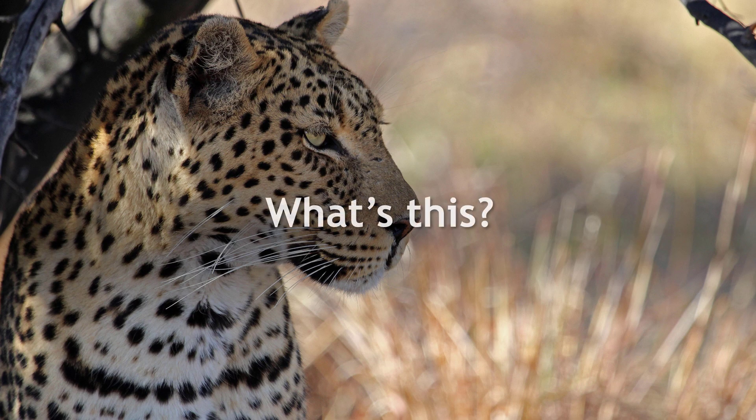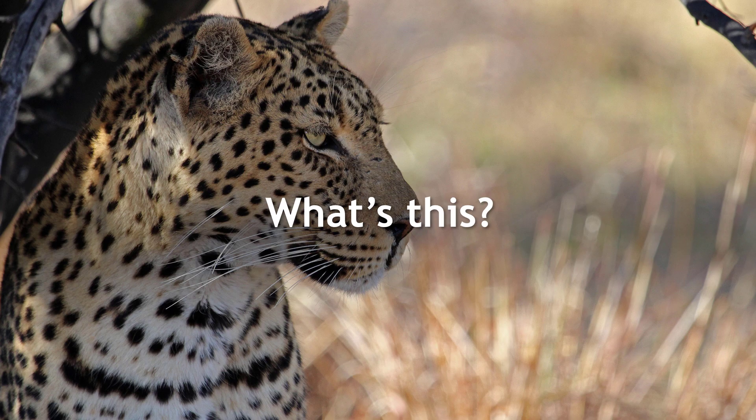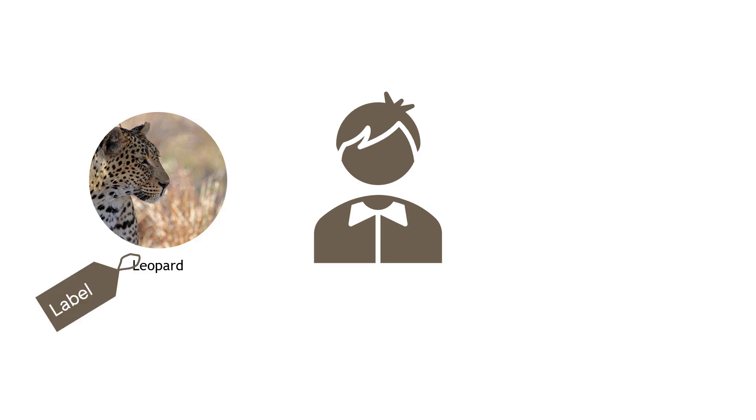If I gave you this image, you could probably identify pretty quickly that it's a leopard. But let's figure out why it's so easy for you to identify, and how the human brain looks at this. If you think back to when you were a kid, the first time you saw a leopard, or probably a picture of a leopard, at some point somebody presumably told you, or you read, that this is a leopard. And we call that a label.